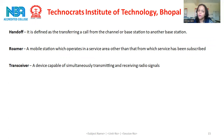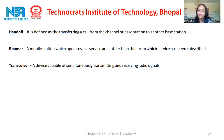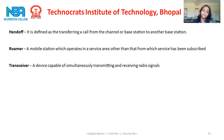What is a roamer? A mobile station which operates in a service area other than that from which services have been subscribed is called a roamer. A transceiver is a device capable of simultaneously transmitting and receiving radio signals.